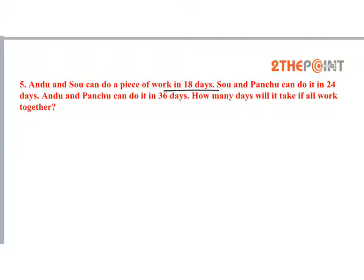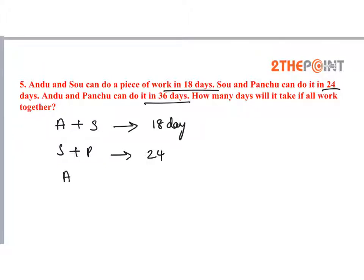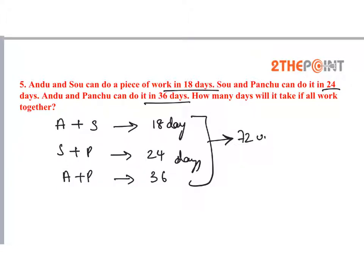Andu and Sau can do a piece of work in 18 days. Sau and Panchu can do it in 24 days. Andu and Panchu can do it in 36 days. In how many days will it take if all three work together? The total work is the LCM of 18, 24, and 36, which is 72 units.